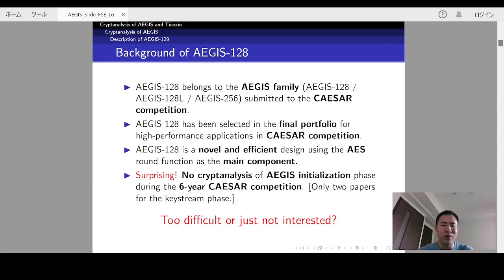It is surprising that there is no cryptanalysis of AEGIS initialization phase during the six-year competition, and there are only two papers targeting its keystream phase, where only AEGIS-256 was shown to be insecure.